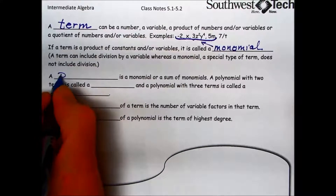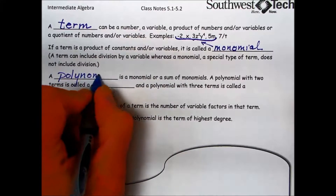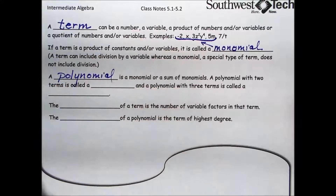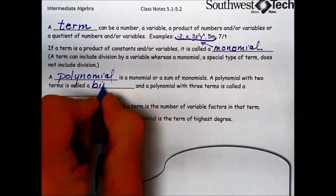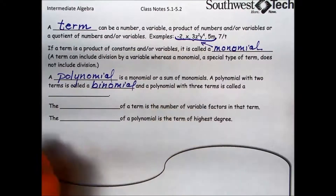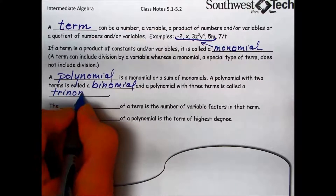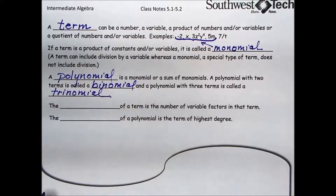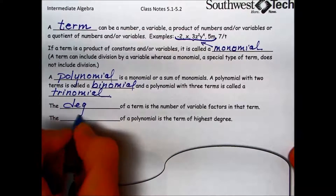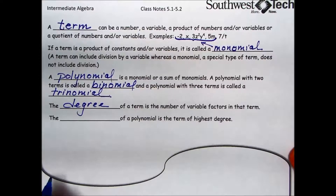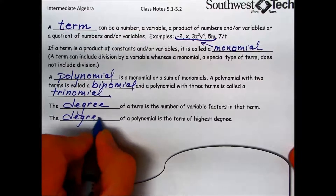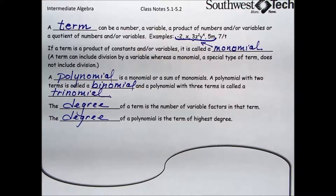A polynomial is a monomial or a sum of monomials. If it has two terms, it's called a binomial, and a polynomial with three terms is called a trinomial. The other things we want to define here are the degree. By definition, the degree of a term is the number of variable factors in that term, and the degree of a polynomial is the term of highest degree.